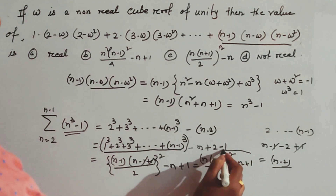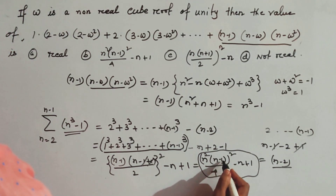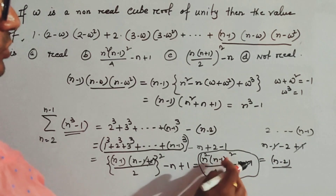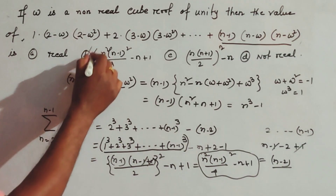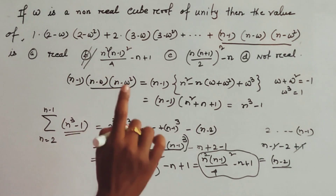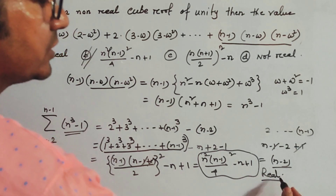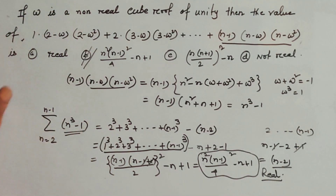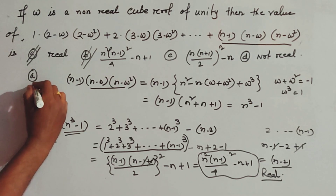So our answer is n²(n−1)²/4 − (n−1). The correct option is option B. Also, our result is a purely real number, so another correct option is option A. Therefore, the answer is both option A and option B.